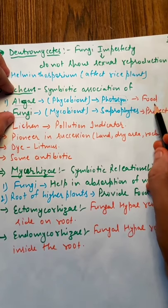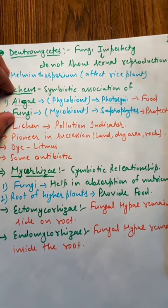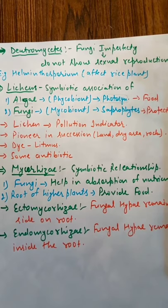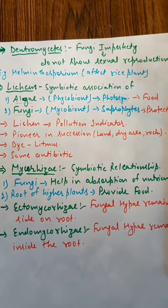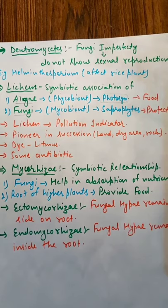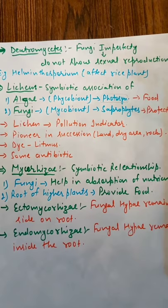Here both partners are benefited. That is why this is a symbiotic relationship. Now what is the significance of lichen? Lichen are pollution indicators or we can say air pollution indicators. Where there is air pollution, lichen do not grow. So if lichen are present, it means that area is free of air pollution.